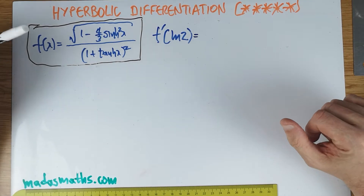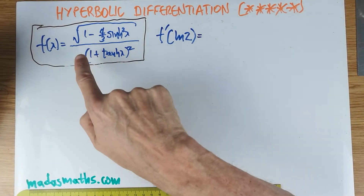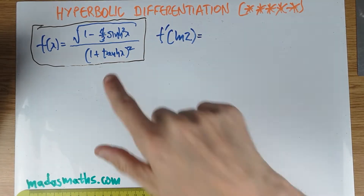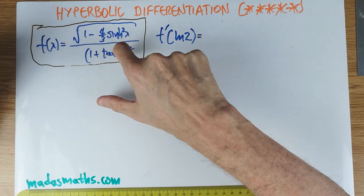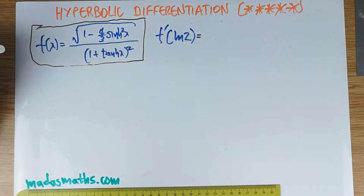What the question is actually essentially saying: if f(x) is this quantity — the square root of 1 minus 4/3 sinh²(x), all over (1 + tanh x)² — with the usual condition that the denominator cannot be 0, so tanh(x) cannot be minus 1, find the exact value of f'(log 2).